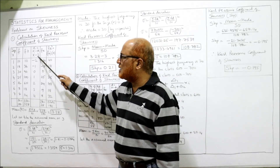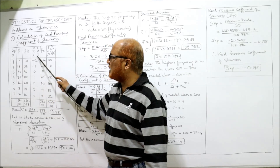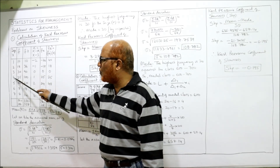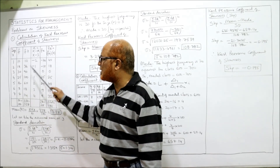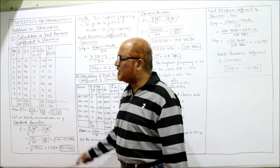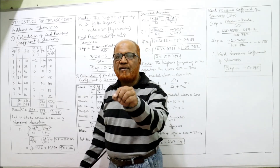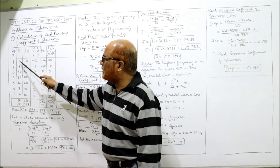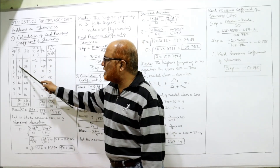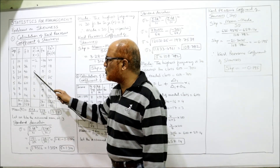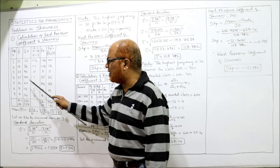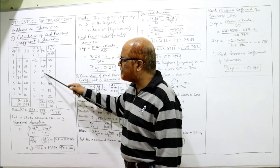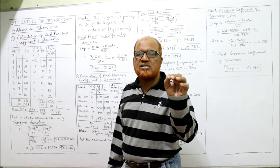The column small x = X − A = X − 3. So: 1−3=−2, 2−3=−1, 3−3=0, 4−3=1, 5−3=2, 6−3=3, 7−3=4. Now multiply f × small x: 10×(−2)=−20, 18×(−1)=−18, 30×0=0, 25×1=25, 12×2=24, 3×3=9, 2×4=8. Now we need fd².